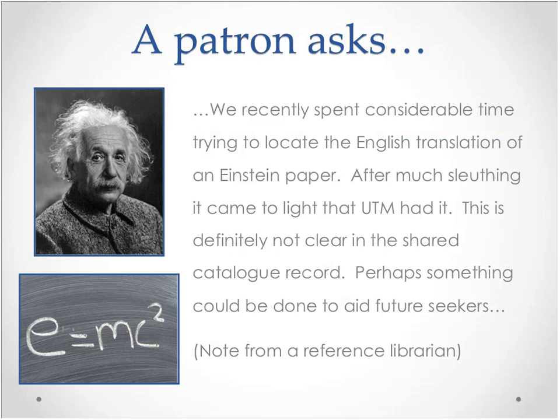The note read: we recently spent considerable time trying to locate the English translation of an Einstein paper. After much searching, it came to light that another library at University of Toronto had it. This is definitely not clear in the shared catalog record. Perhaps something could be done to aid future seekers. While investigating this problem, we found that the underlying relationship between the article, the journal, and the monograph where the paper was republished were not apparent.